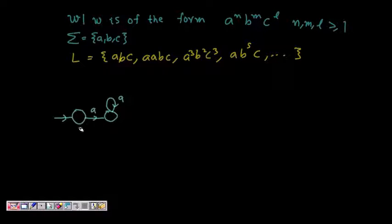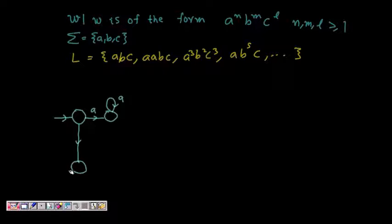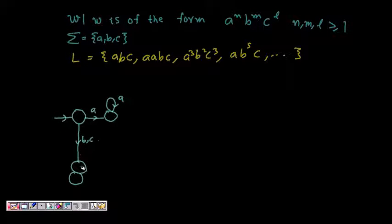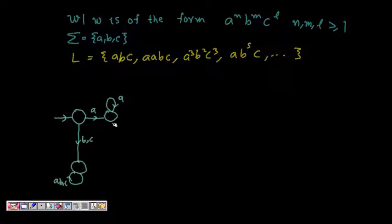But if you get a 'b' or a 'c' initially, that is not a correct string, so I go to a dead state — it's not accepted. Initially, if you get a 'b' or 'c', you go to the dead state, and then whatever a, b, c you get after that are all useless.